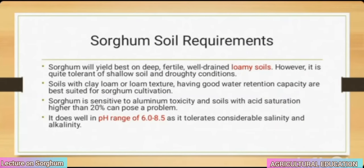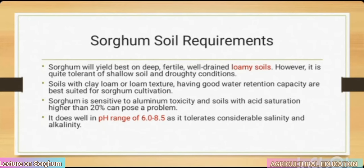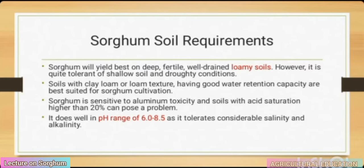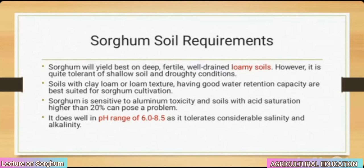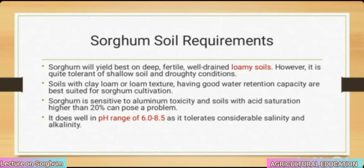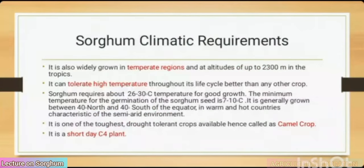Sorghum soil requirements: sorghum yields best on deep, fertile, well-drained loamy soils, though it tolerates shallow soils and waterlogged conditions. Soils with clay loam or loam texture having good water retention capacity are best suited. Sorghum is sensitive to aluminum toxicity; soils with acid saturation higher than 20% can pose a problem. It does well in a pH range of 6.0 to 8.5, tolerating considerable salinity and alkalinity.